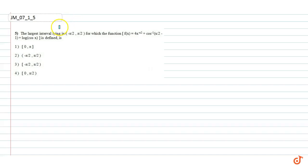This question is from function. In this question there is a function f(x) = 4^(-x²) + cos inverse((x/2) - 1) + log(cos x). This is 4^(-x²), which is misprinted here, and this function is lying between -π/2 to π/2.